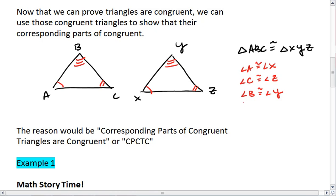We also know that side AB is congruent to side XY, side BC is congruent to side YZ, and side AC is congruent to side XZ.